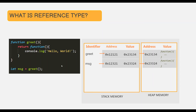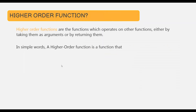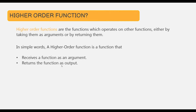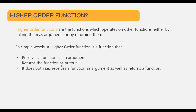Now let's talk about what is a higher order function. A higher order function is a function which operates on other functions, either by taking them as an argument or by returning them. In simple words, a higher order function is a function that receives a function as an argument, or returns a function as output, or does both.